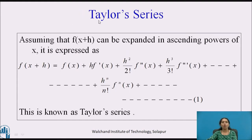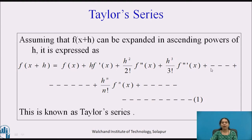Let us see the different forms of Taylor series. Assuming that f(x+h) can be expanded in ascending powers of h, it is expressed as: f(x+h) = f(x) + h·f'(x) + (h²/2!)·f''(x) + (h³/3!)·f'''(x) + ... In general, the nth term is h^n / n! times the nth derivative of f at x, and so on. This is known as Taylor series — let us call this Representation 1.